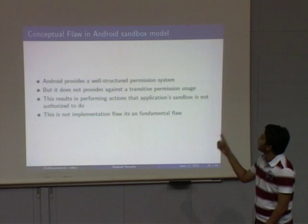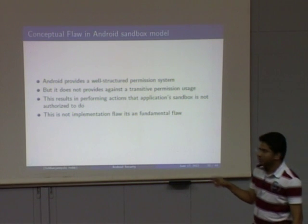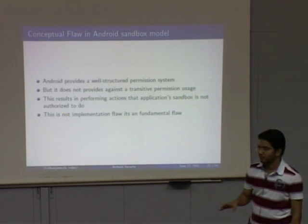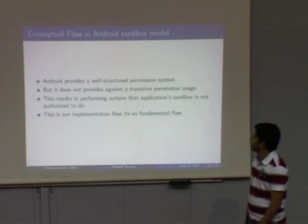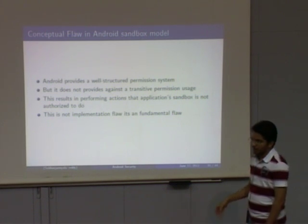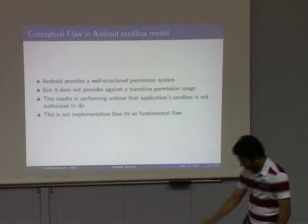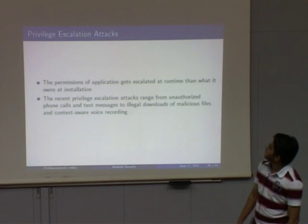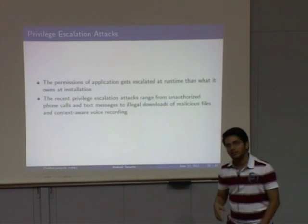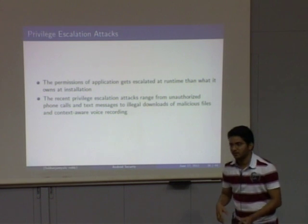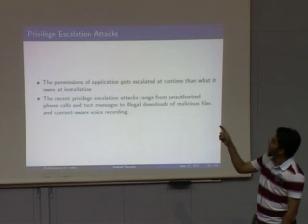There is a conceptual flaw in the Android sandbox. Android is well-structured in permissions, but it does not track transitive permissions. This results in performing actions that the Android sandbox is not authorized to do — an application not authorized to do something can still do it because of this fundamental flaw. This is the privilege escalation attack: at installation, an application has only a few permissions, but while running it may escalate its privileges, enabling unauthorized phone calls, text messages, illegal downloads, etc.